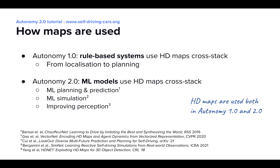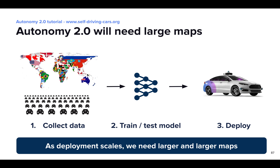HD maps have been a key component of Autonomy 1.0. For example, rule-based systems like the planner need highly accurate maps to work. And HD maps remain a very important requirement for Autonomy 2.0 as well. In the other sections of this tutorial, you will see several examples of machine learning models for prediction, planning, and simulation that need HD maps as input. And since Autonomy 2.0 gives us a path to deploy SDVs in many new areas more easily, it is important that maps can scale equally well to support deployment and data collection in large geographical areas.